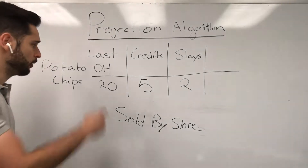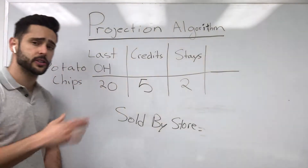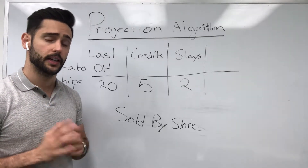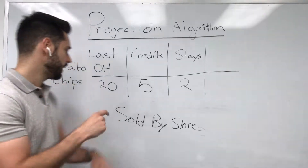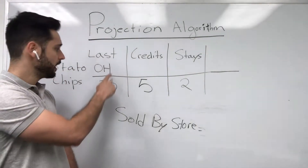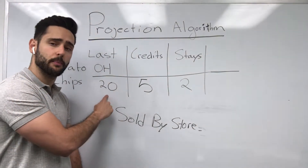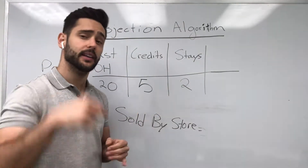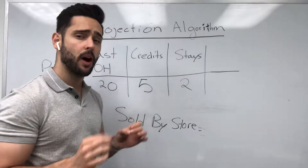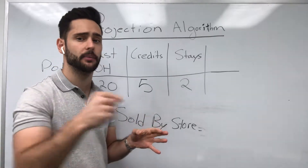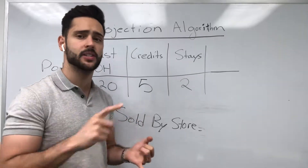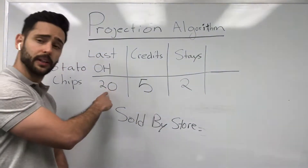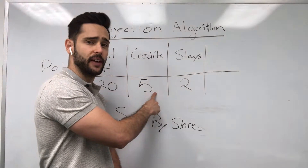On the board here I've created an example of potato chips. Let's say that these potato chips I sell to Public Supermarket — this is for one store. Let's say that on Monday I left 20 potato chips. Last on hand is 20 — that's what I left at the store on Monday. Today is Thursday. When I walk in, the first thing I'm going to do is see if there are any potato chips I need to take back as a credit because they were damaged, stale, whatever. In this case, our credits were five.